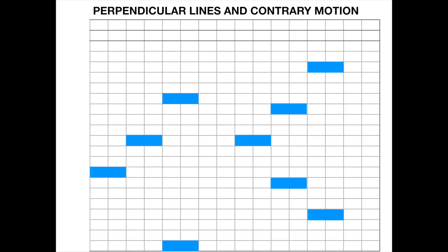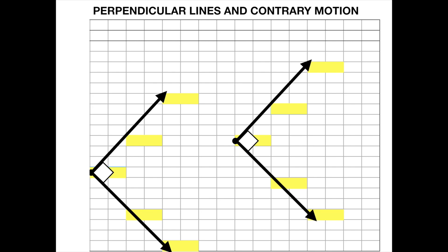To make our contrary motion perpendicular, we need to make sure that the two melody lines move away from each other at a right angle. We can place the square at the point where the two melody lines meet to make sure they move apart at a right angle. Let's listen.